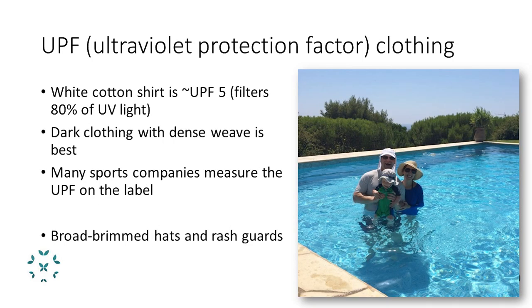I also recommend UV protective clothing. You don't have to use sunscreen if you're using a barrier — a shirt or jacket protecting you from the sun. Even a white cotton shirt has a UPF (universal protection factor) of 5, blocking 80% of UV light, which is pretty good. Dark clothing with a very dense weave is best and blocks the most sunlight. Many sports companies write the UPF on the label, and you can buy special clothing. Using big broad-brimmed hats and rash guards when going to the beach is helpful. This is what my family looks like at a sunny beach — wearing long sleeves, long pants, and giant hats. Don't be afraid to wear those things; more and more people are protecting themselves that way.